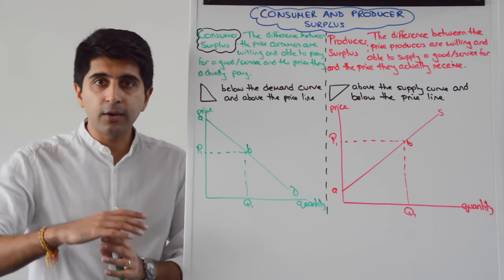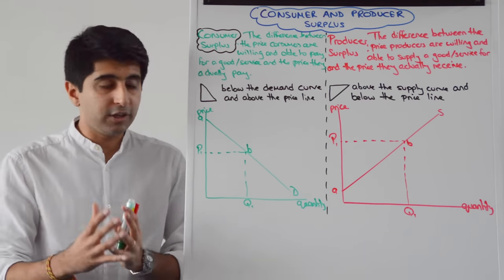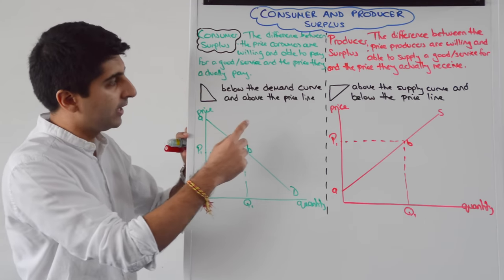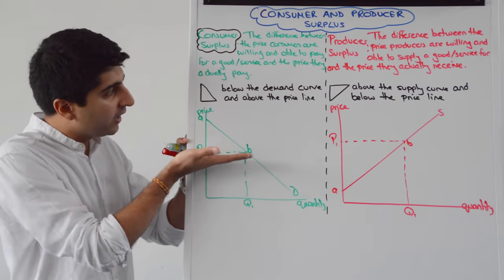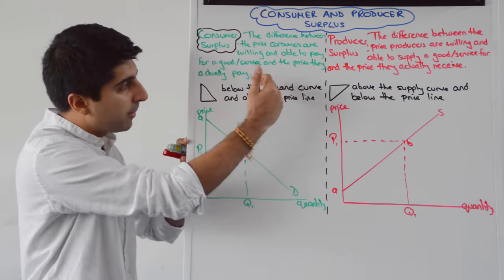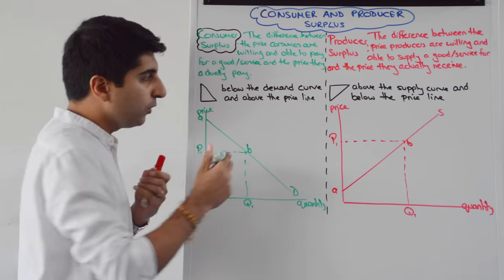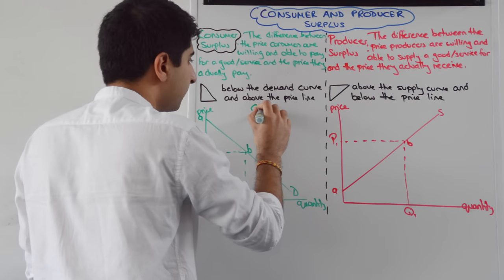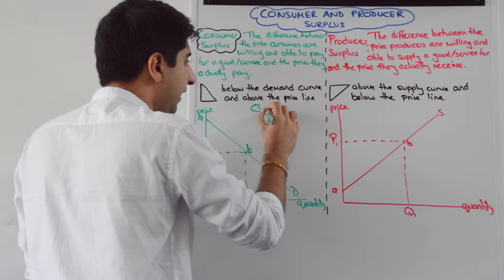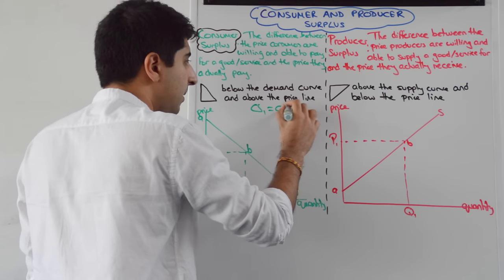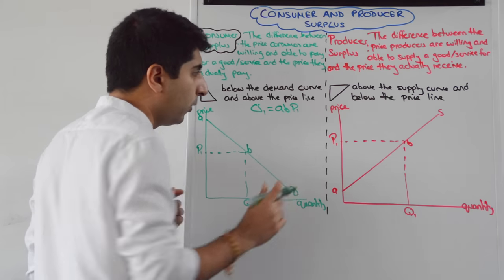Let's formalise this on a diagram. Consumer surplus is the area above the price line but below the demand curve. So if we call this consumer surplus 1, it's equivalent to the area A, B, P1.